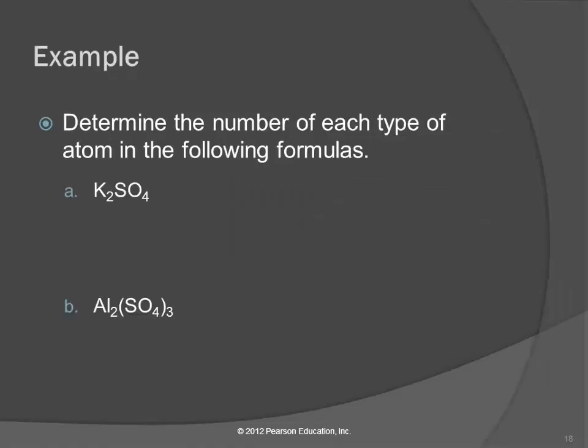So examples. Determine the number of each type of atom in the following formulas. So K2SO4. So there are three elements in here, because there's three capital letters. So we've got K, we have S, and we have O. How many K's are there? Two. How many S's? One. And how many oxygens? Four.